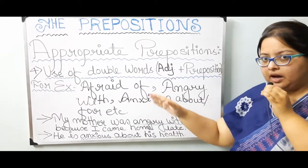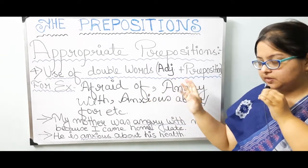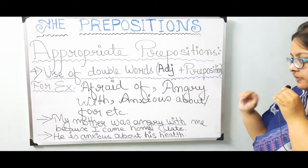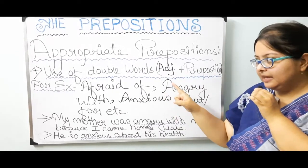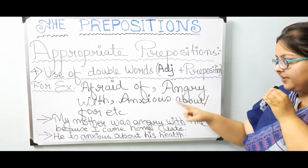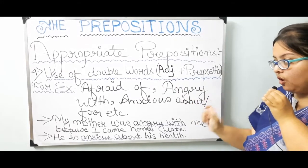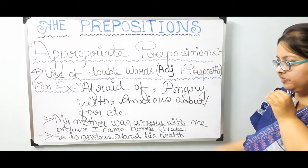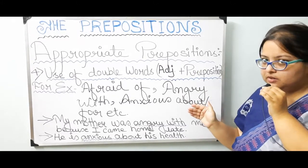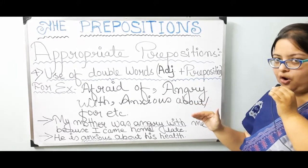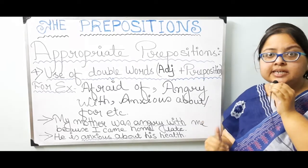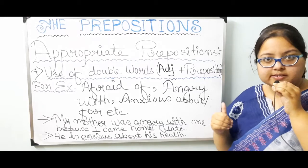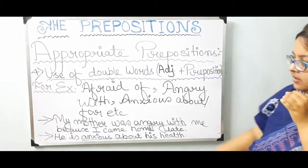Number 4: again the use of double words — adjective plus preposition. For example: afraid of, angry with, anxious about, or anxious for. With 'anxious', you can use either 'about' or 'for' according to the need of the sentence, etc.